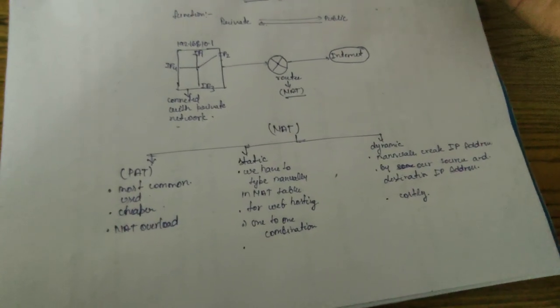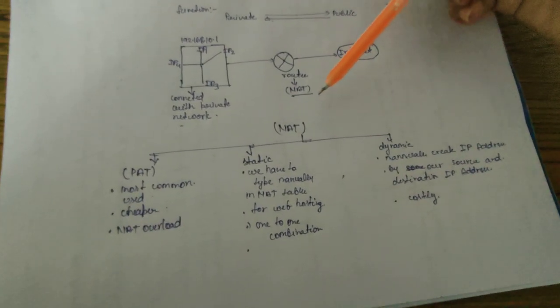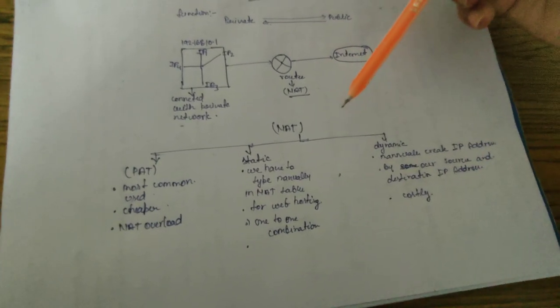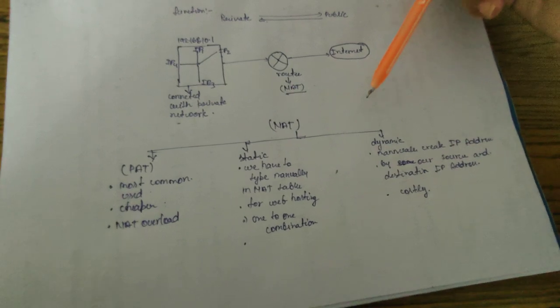One-to-one communication means that one IP address can connect with one router only. Two IP addresses cannot connect to the same router.